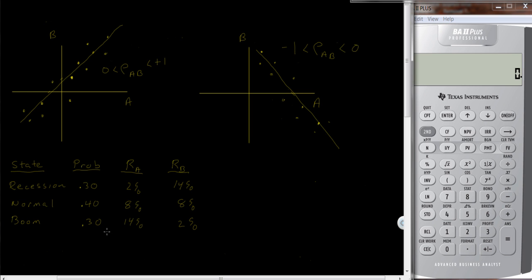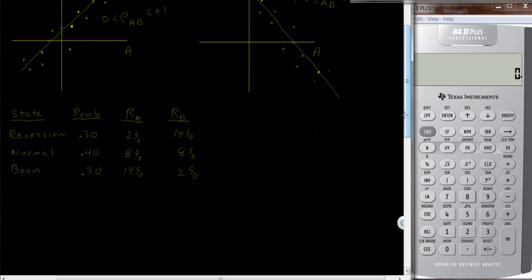These probabilities should add up to one. In the previous video I made, someone noted that I made a mistake and that these probabilities did not add up to one. So here, if we have a recession, A gets a 2% return; normal growth 8%; and in the boom period, 14%. B, on the other hand, is just the opposite. During a recession it goes up 14%, during normal growth 8%, and during a boom period it goes up 2%. We'll find something special about this example, but I did it this way to save time on the calculation.